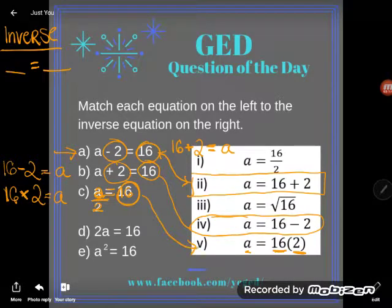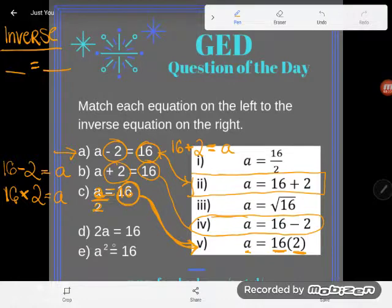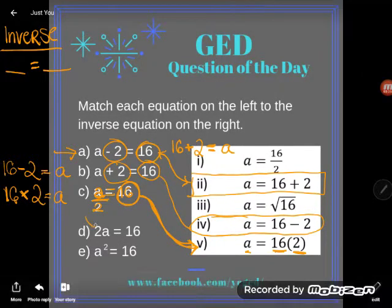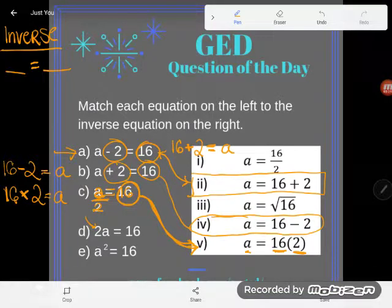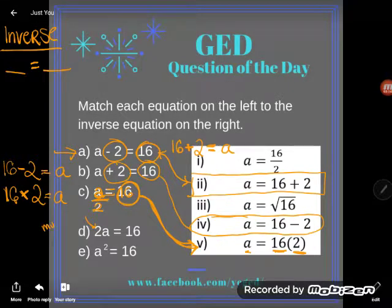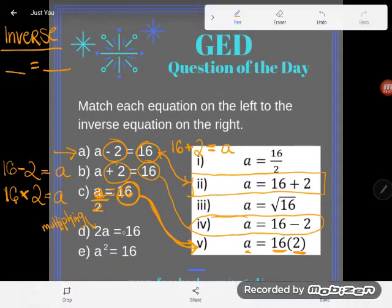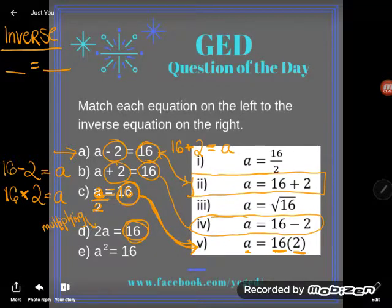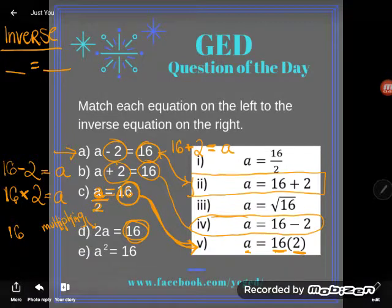Same thing here. If I have 2a equals 16, a lot of students don't know what's happening here. They're like, 'Oh my gosh, the 2 and the a are all squished together, no symbol in between.' Do remember that when a number and a letter are really close with nothing between them, the two are multiplying. So this currently says 2 times a equals 16.